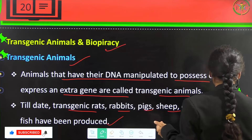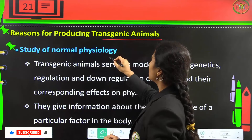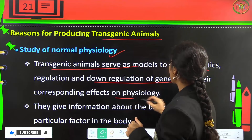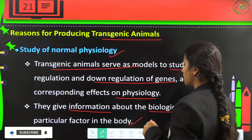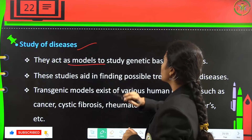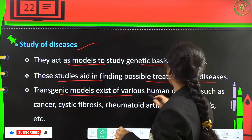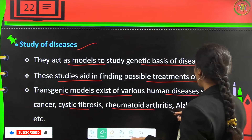Reasons for producing transgenic animals include the study of normal physiology — transgenic animals serve as models to study genetics, regulation and downregulation of genes, and their effects on physiology, giving information about the biological role of a particular factor. For study of diseases, they act as models to study the genetic basis of diseases and aid in finding possible treatments. Transgenic models exist for various human diseases like cancer, cystic fibrosis, rheumatoid arthritis, and Alzheimer's.